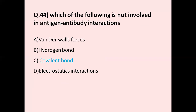Question number 44: Which of the following is not involved in antigen-antibody reaction? Option A van der Waals forces, option B hydrogen bond, option C covalent bond, option D electrostatic interactions. The correct answer is covalent bond. Options A, B, and D are involved in antigen-antibody interaction. Option C, covalent bond, is not involved.